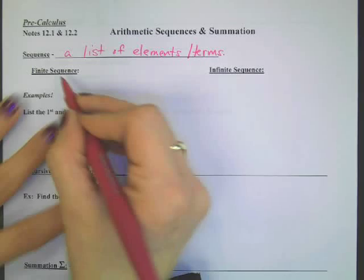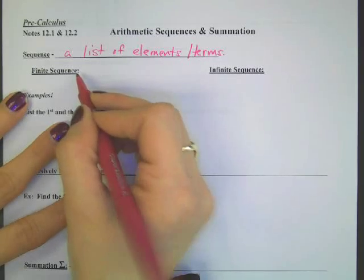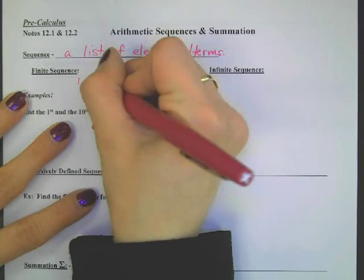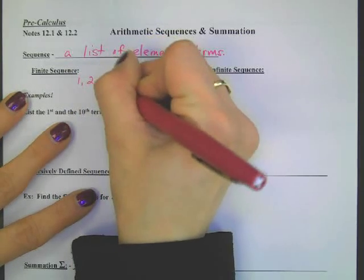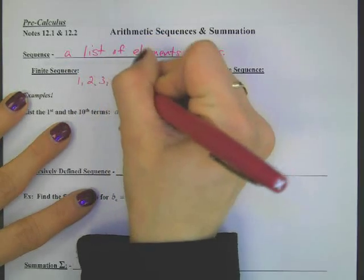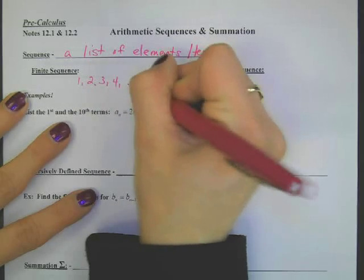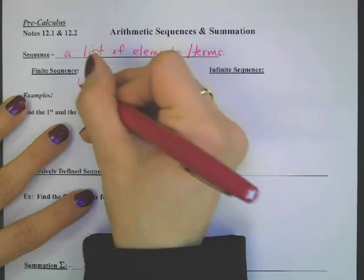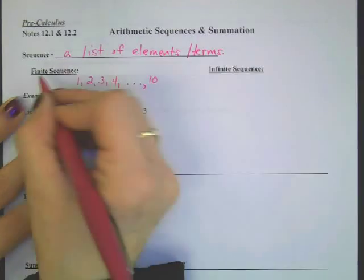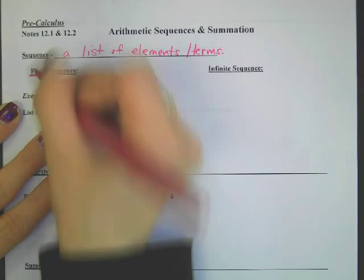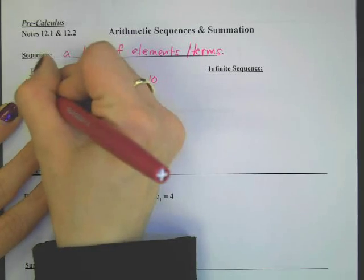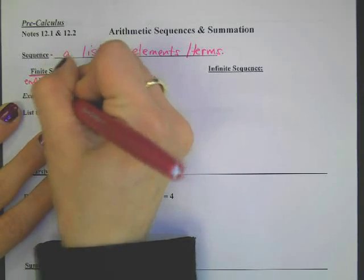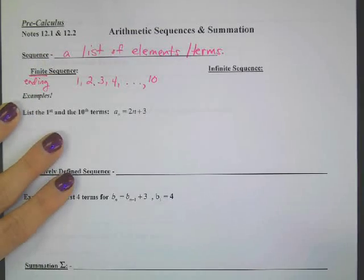For example, here's a finite sequence: 1, 2, 3, 4, dot dot dot, 10. It goes from 1 up to 10. Finite means ending, so it has an end.